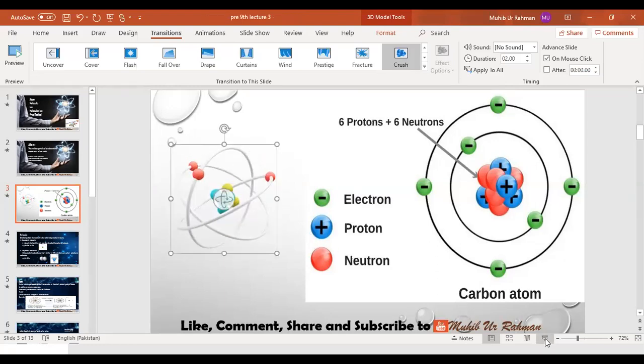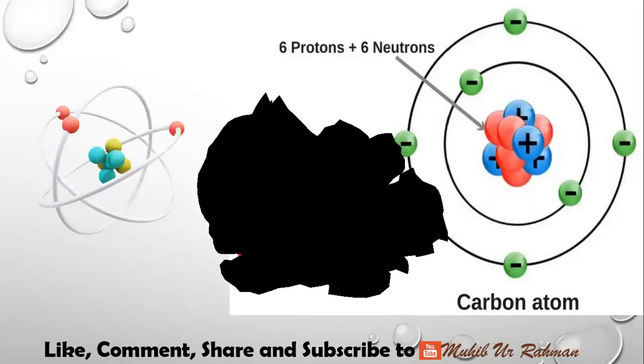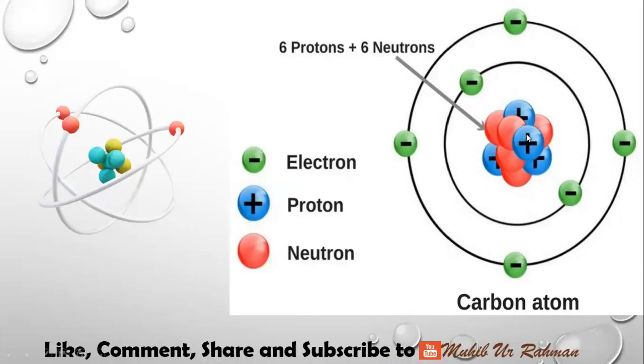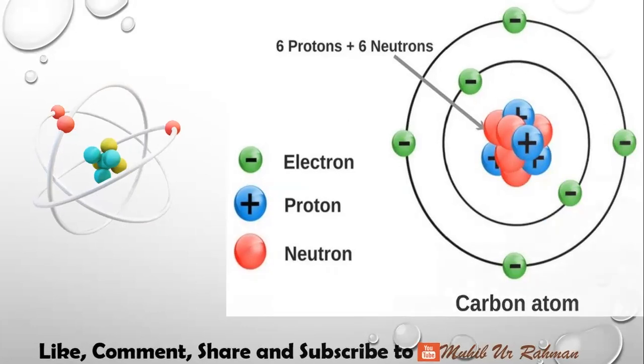In the center is the nucleus containing protons and neutrons. Yellow represents protons, blue represents neutrons. Surrounding them, red electrons revolve. This is carbon atom's simplest structure: six protons in the nucleus, six neutrons, and six electrons revolving in orbits or shells.